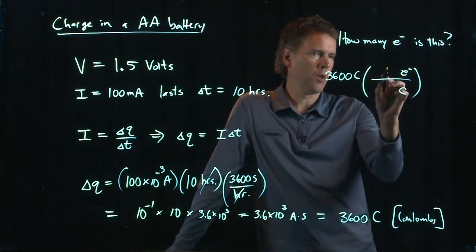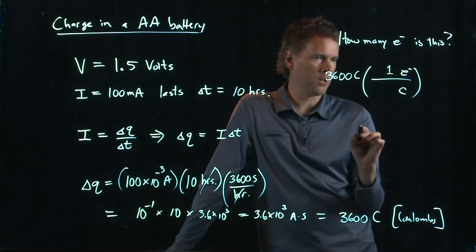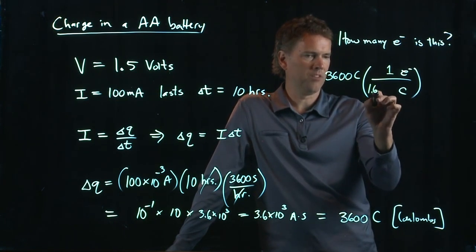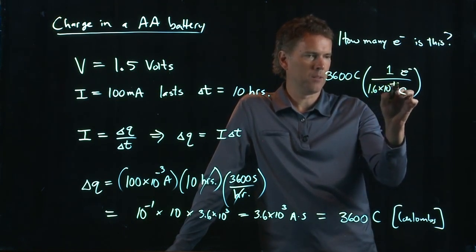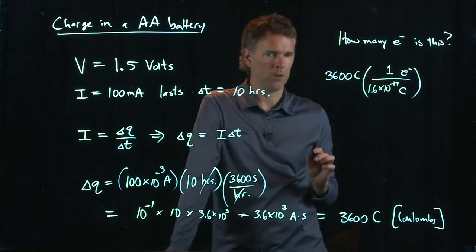What do I know? I know that one electron has a charge of 1.6 times 10 to the minus 19 coulombs.